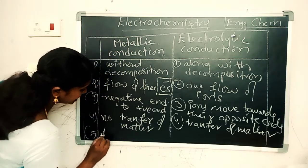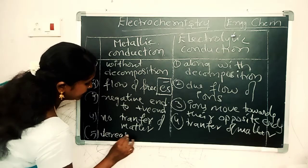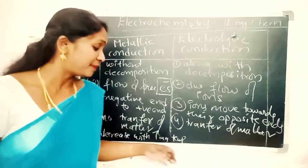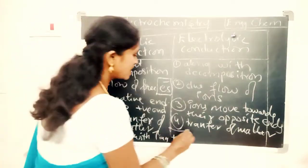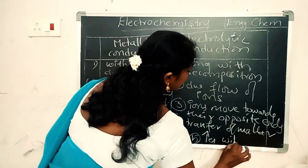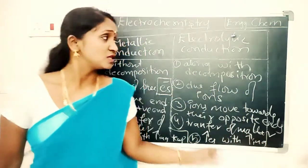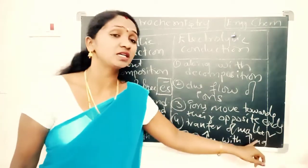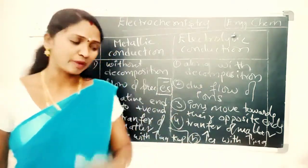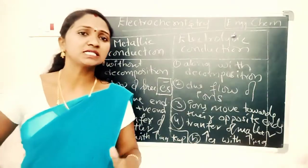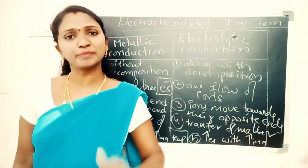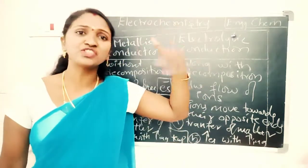Fifth difference: metallic conduction decreases with increasing temperature. Whereas electrolytic conduction increases with increasing temperature.